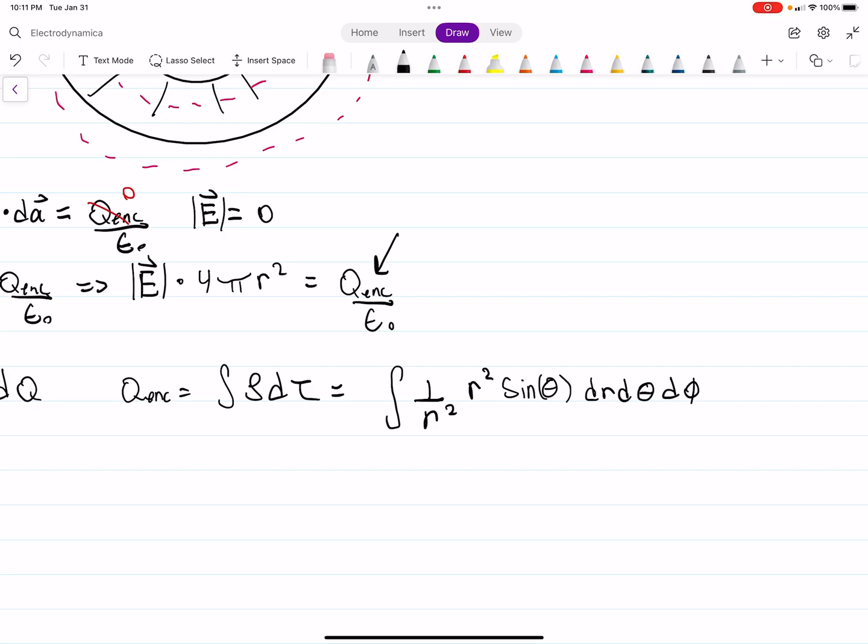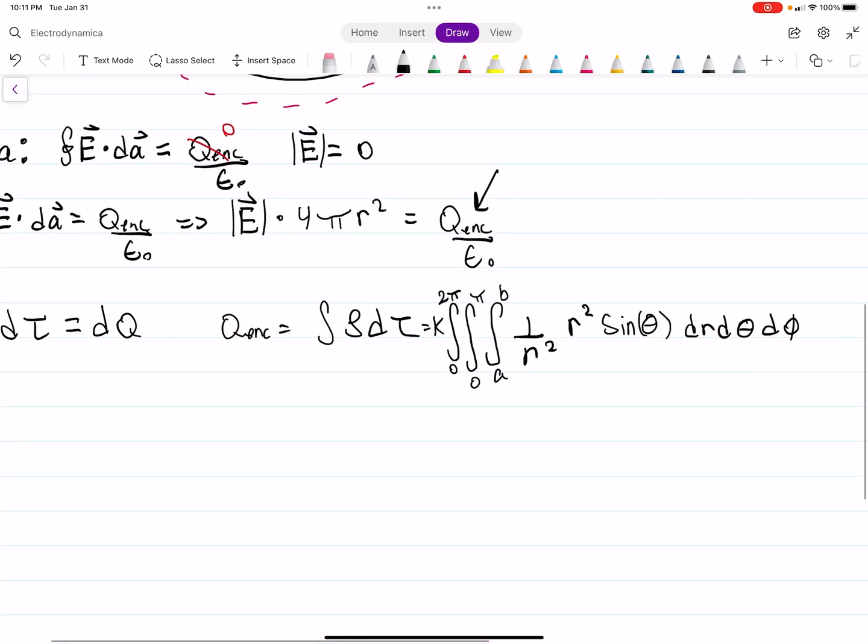And this is technically a triple integral, so I'm going to try to create a little bit more space here so I can do our bounds. We're integrating from R equals A to R equals B. And then, we integrate from 0 to pi, 0 to pi for the theta dependence, and then 0 to 2 pi for the phi dependence. Hopefully you're fine with that. So all you have to do, then, is solve this integral.